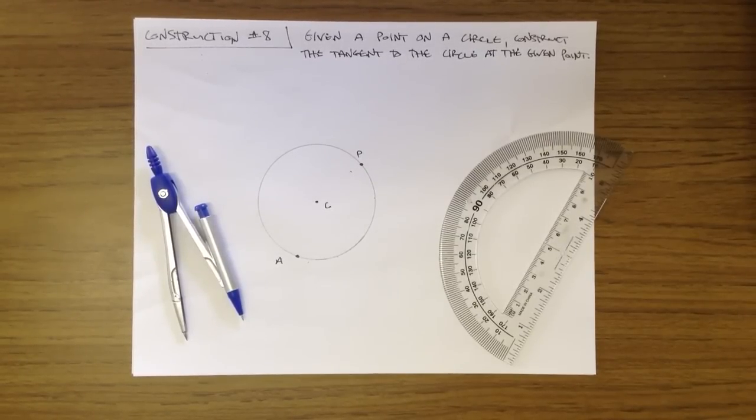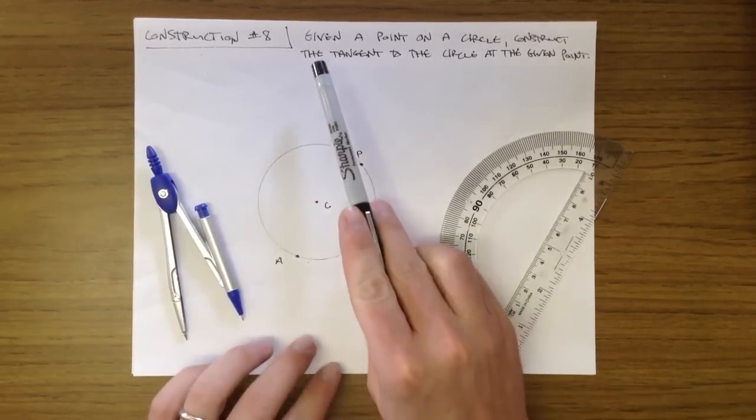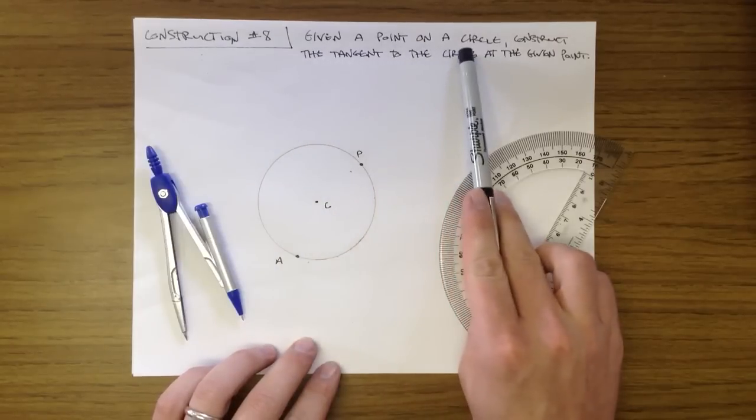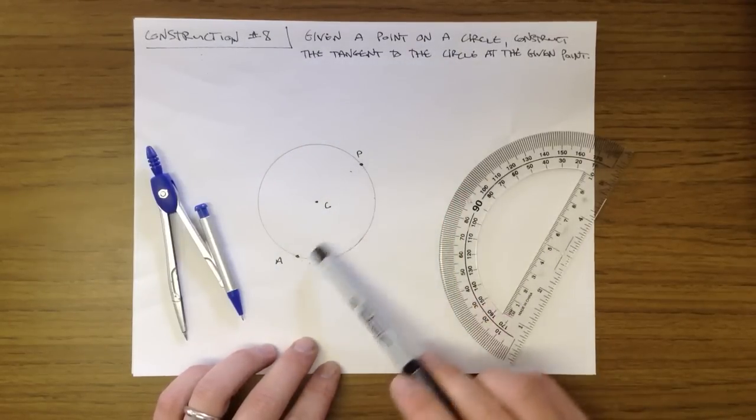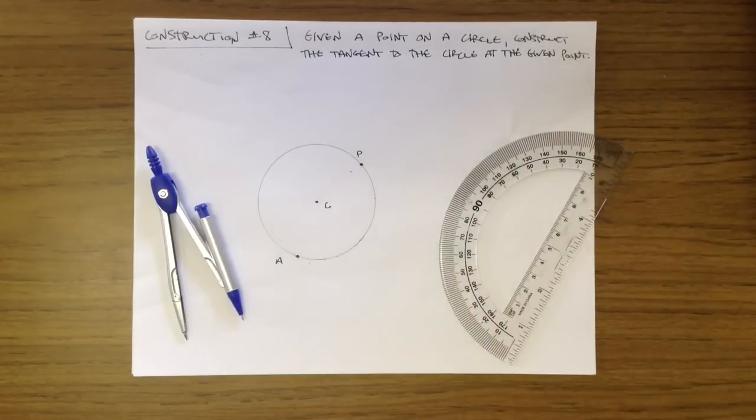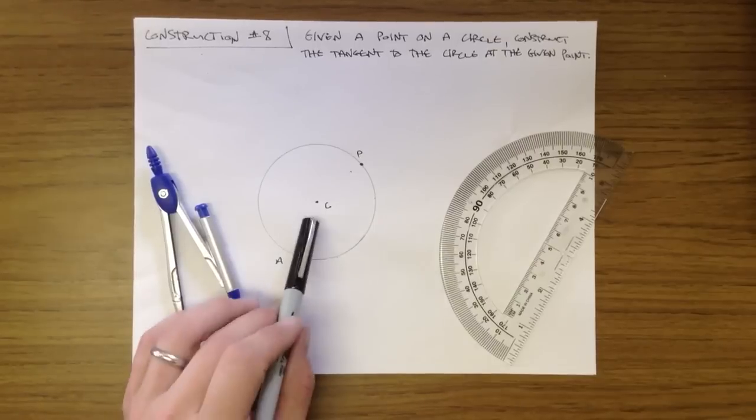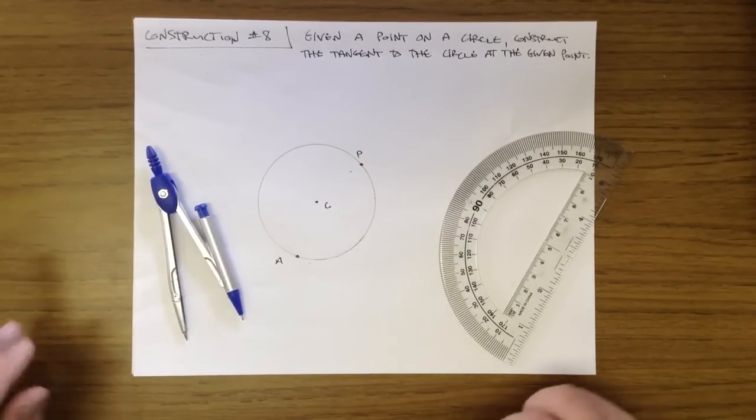The number really doesn't matter. What you should know is that this is the construction where we are going to be given a point on a circle. In this case, we have P and A, and we want to construct the tangent to this circle, C, at those given points.